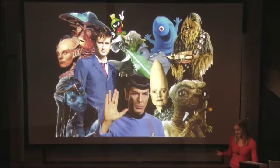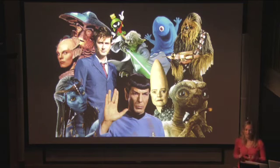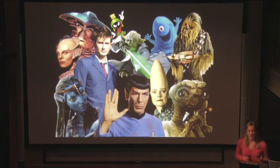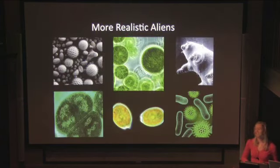Moving on to habitable planets — when you think of trying to find life on other worlds, the picture that Hollywood leaves you with is life that looks an awful lot like humans wearing disguises, perhaps with funny noses and funny ears. But these aliens look a little bit too human-like for the comfort of most scientists. When we're talking about trying to find life on other worlds, we generally aren't thinking about trying to find things like Spock and Doctor Who. We're trying to find things like microbes.